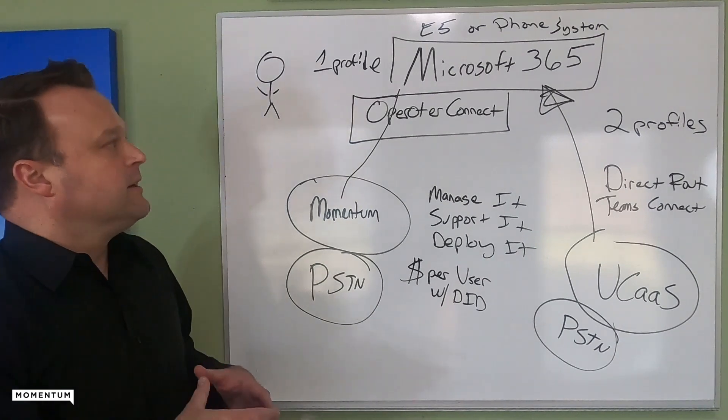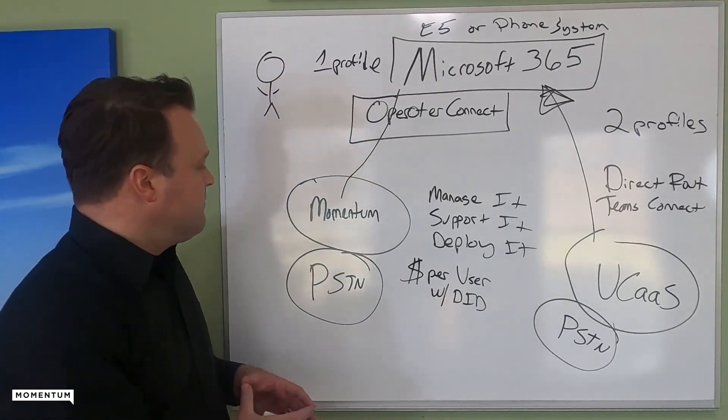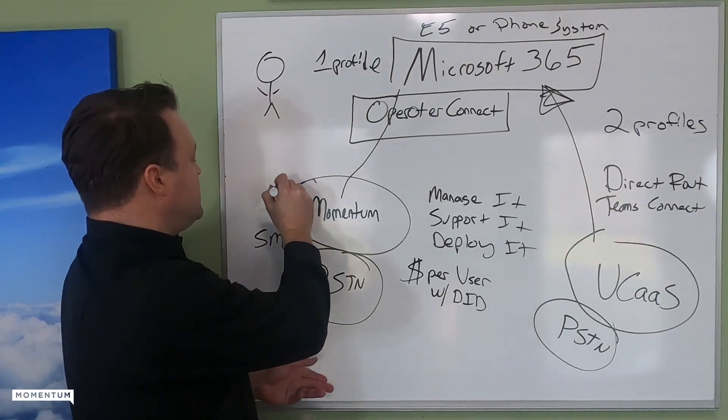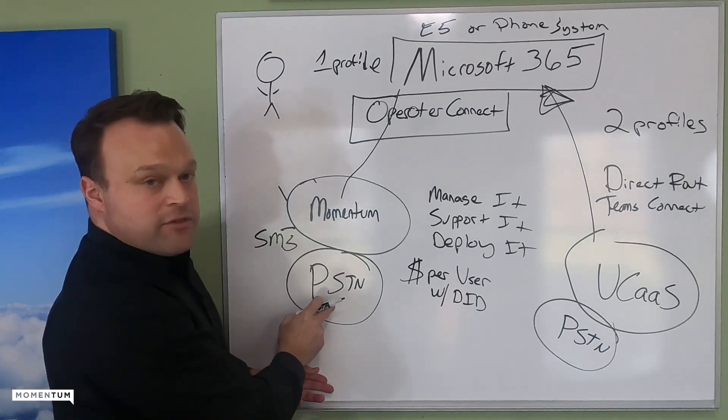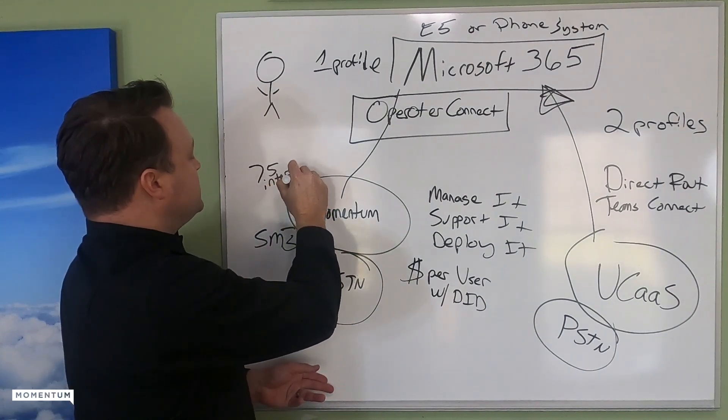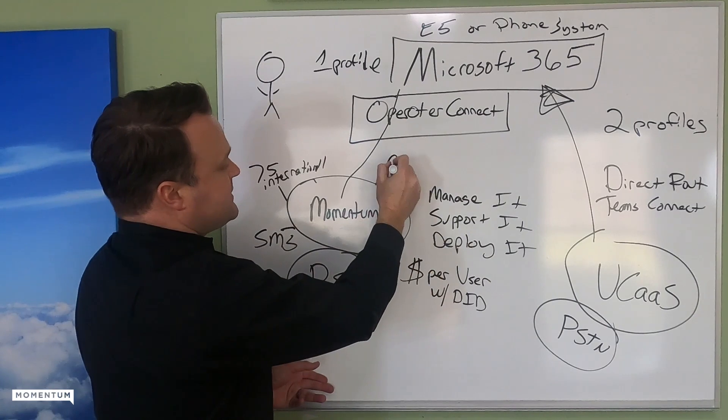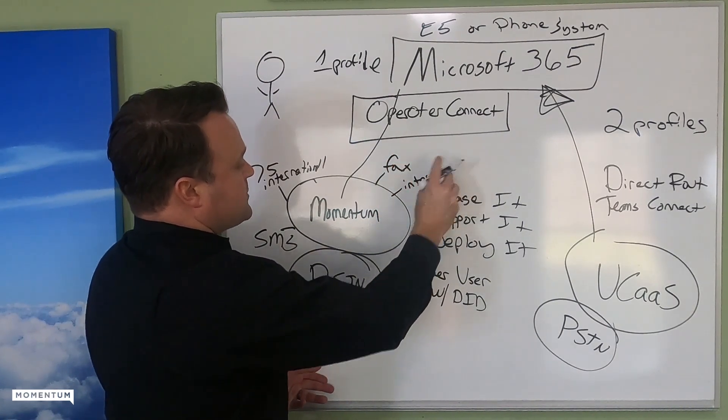Advanced queuing, call routing, Microsoft has those feature sets available via the last video we did. If texting is a feature set you need, we have that Momentum as a capability with your DIDs. We're 75 countries internationally, so if that's a feature set. Faxing, if that's something you need. If you need internet, we can help you.